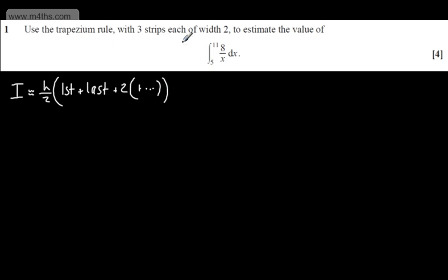Let's look at our particular integral. We're going to consider x₀ equals 5, x₁ equals 7, x₂ equals 9, and x₃ equals 11. If we have 3 strips we have 4 ordinates.